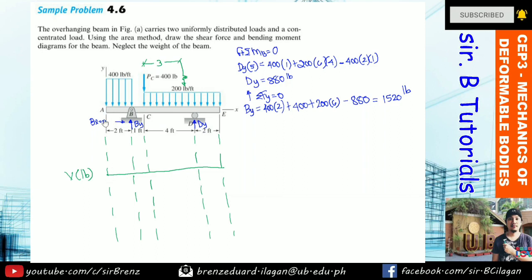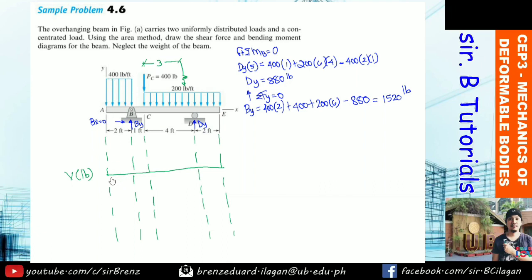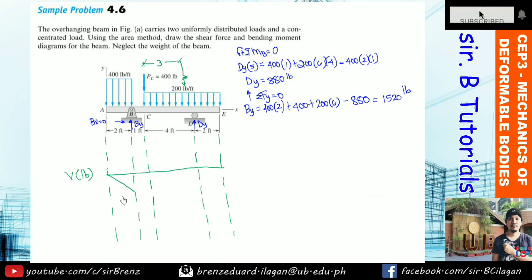Let's start the shear diagram at point A — it begins at zero. From A to B there is a uniform load of 400 lb/ft, which is a zero-degree curve on the load diagram, making the shear a first-degree (linear) curve going downward. So: 0 minus 400 times 2 = negative 800. The shear at B just before the reaction is negative 800 pounds.